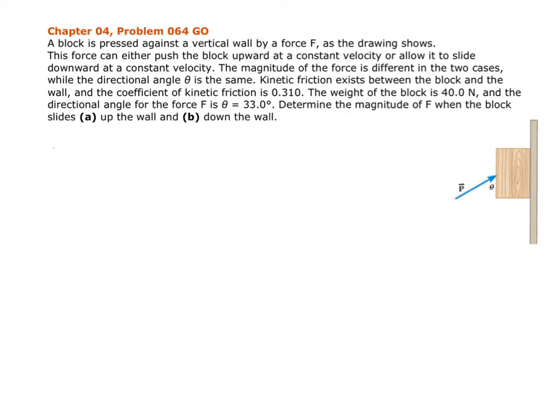Hey class, I wanted to talk about number 64 on the homework to kind of talk through what's going on and help us think about some of the topics, concepts, and ideas that are at play here because this is a really different type of problem. We have this block of wood that's being pushed either up or down a wall. So you're pushing at an angle, and that force is going to allow the block to either move up the wall at a constant velocity or down the wall at a constant velocity.